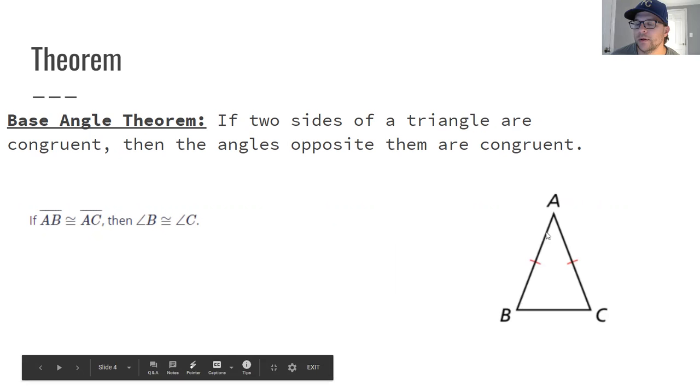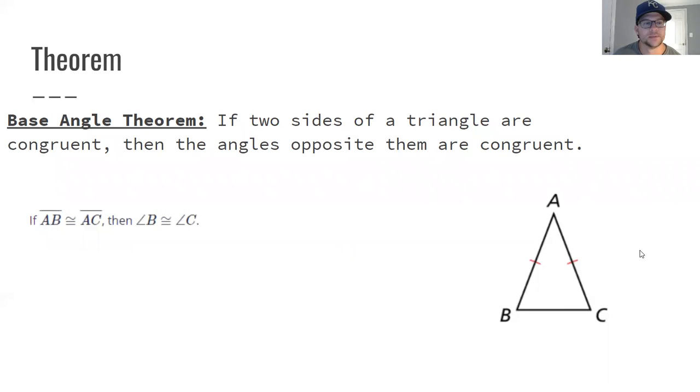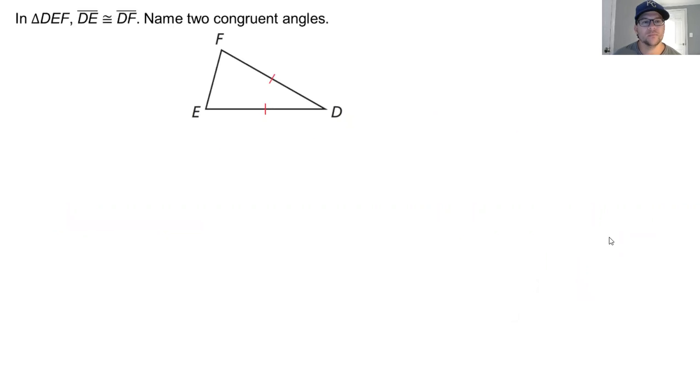We're going to use that a lot to help find the missing angle, knowing that all three of them add up to equal 180. So name some two congruent angles. If we're given this triangle, it's tilted off to the side where DF is congruent to DE. We know that they're congruent because they have the markings on them and it's also given information to us.